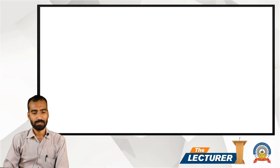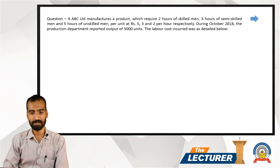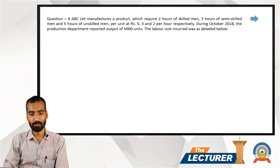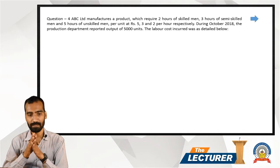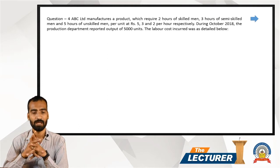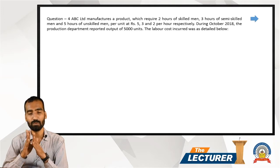ABC Limited manufactures a product which requires 2 hours of skilled men, 3 hours of semi-skilled men, and 5 hours of unskilled men per unit. The wage rates are 8 rupees, 5 rupees, 3 rupees, and 2 rupees per hour respectively for the three types of labor.